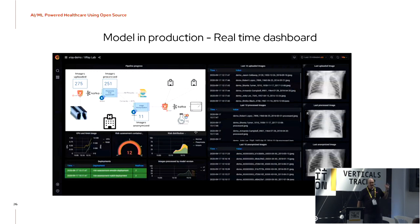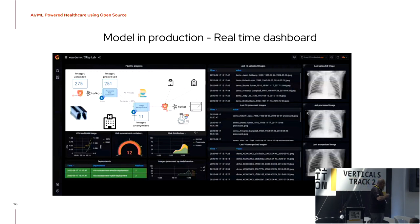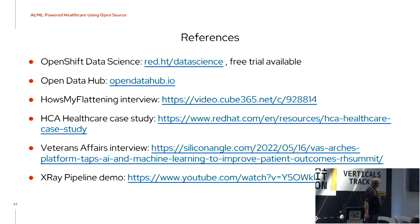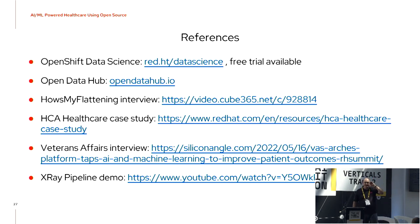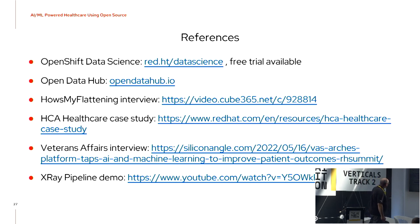We have a demo on this, and if you want to do the workshop for yourself, get in touch with Red Hat. We give full workshops on how to create those pipelines. For OpenShift Data Science itself, there is a 60-day free trial if you want to register and try it. All the case studies — for HCA, How's My Flattening, and the X-ray pipeline demo — are available via links. Thank you, and we even have a few minutes for questions.